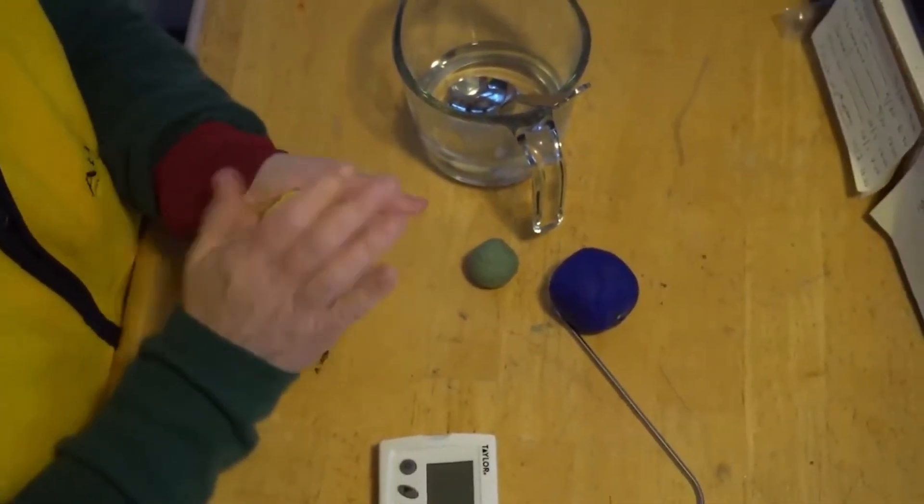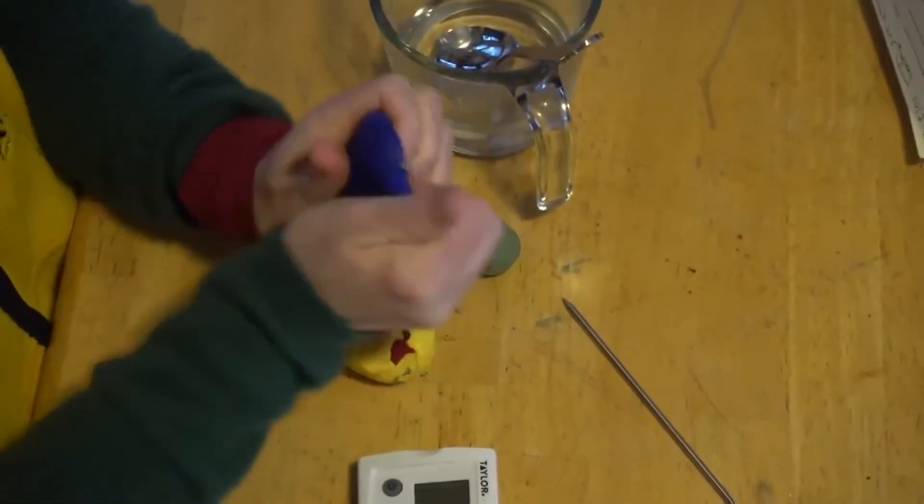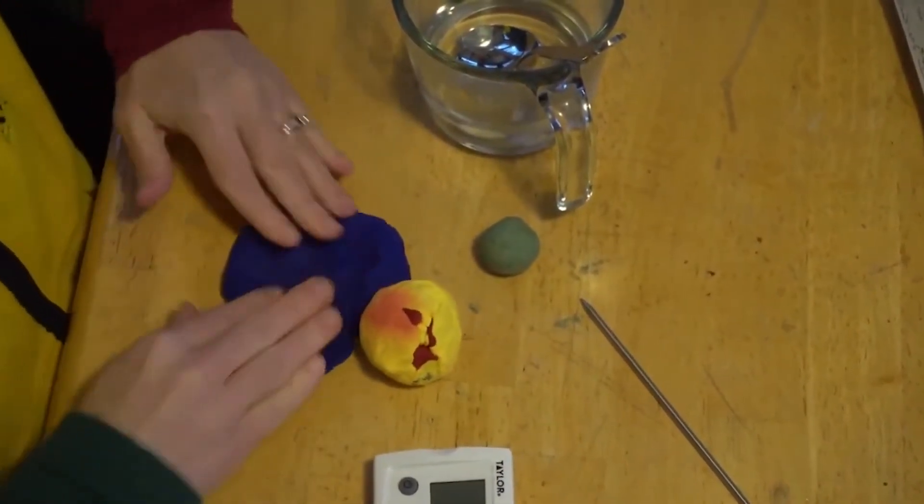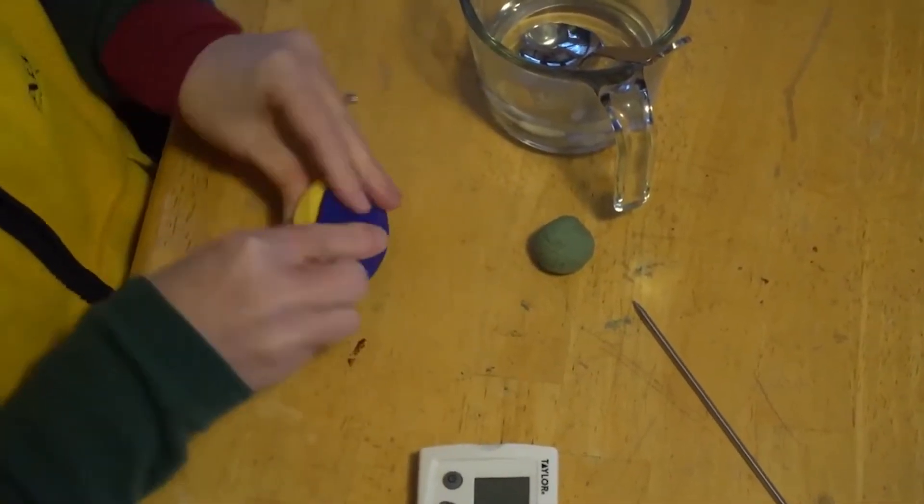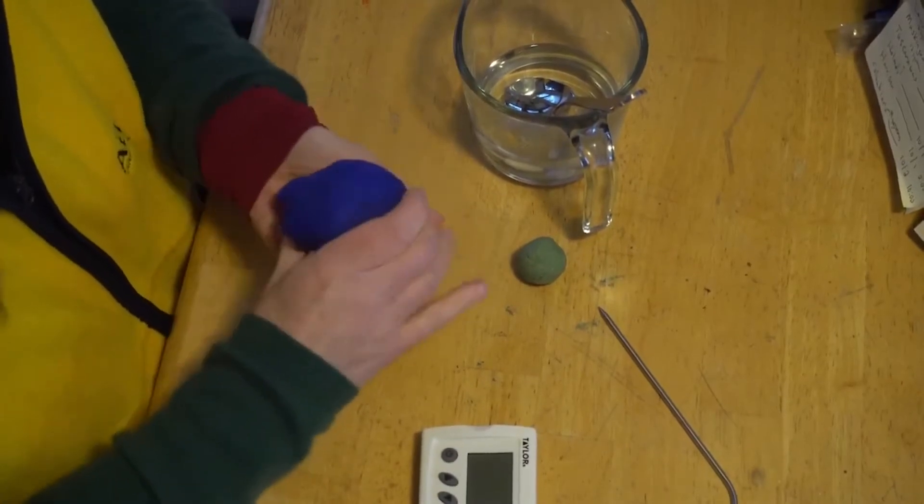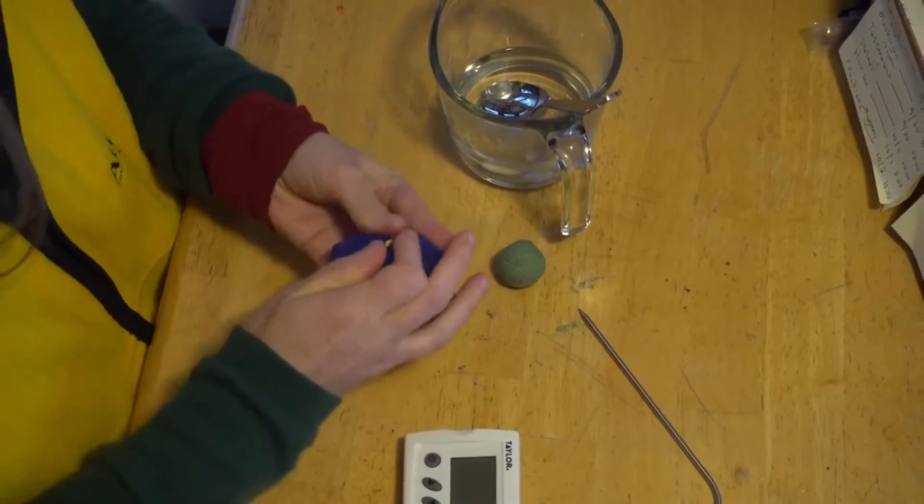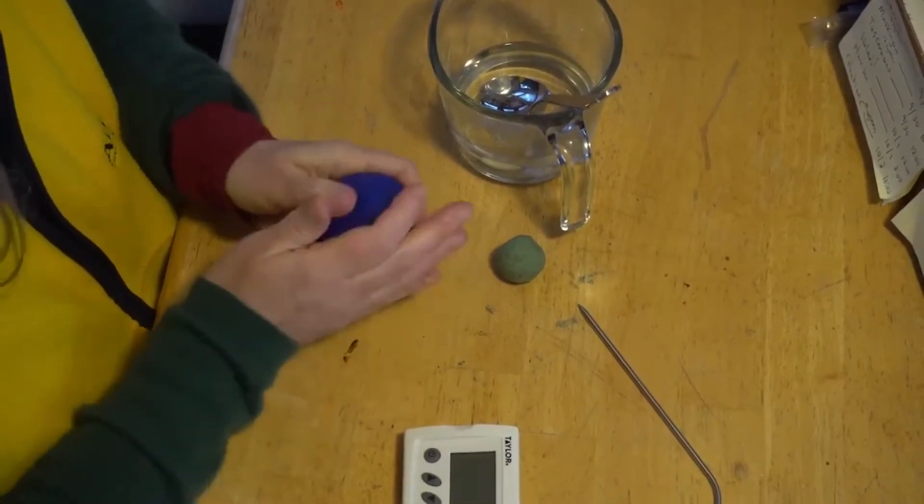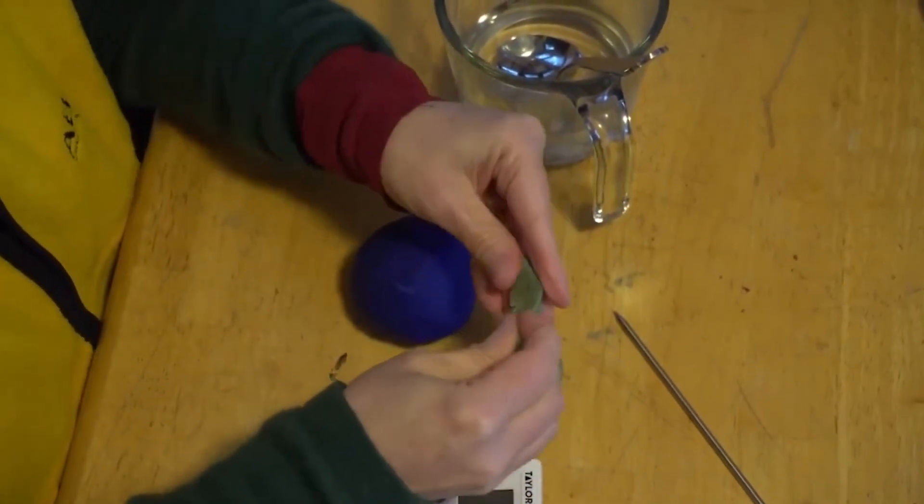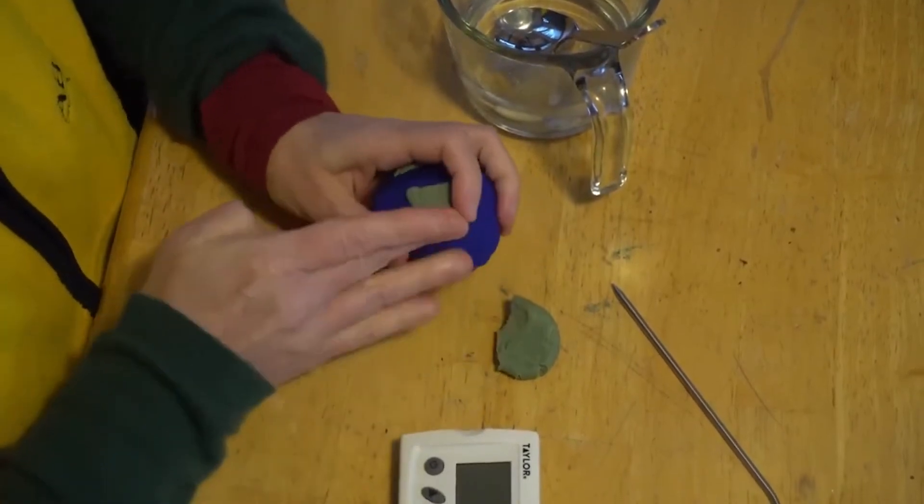And then the Earth, as we know, is surrounded mostly by water, the oceans. So we are going to flatten out the blue and wrap the Earth's crust with the blue color and cover that all the way up. And then the little bits of green will represent our continent's landforms, so we are going to put those on the outside of the Earth.